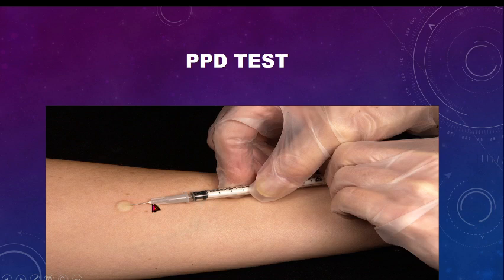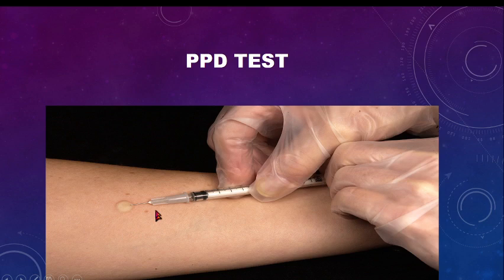This is how you do a PPD test. After intradermal injection, a wheal is formed immediately. Over the next 48 to 72 hours, the area may show redness and induration. You measure the diameter with a small ruler — if it is 10 mm or more, it is considered positive for tuberculosis. This is a non-microbiological test.